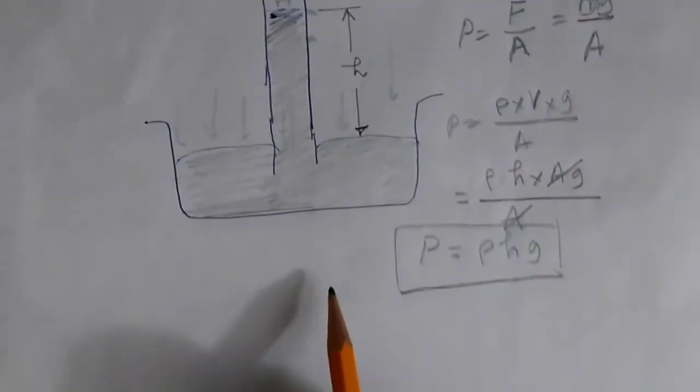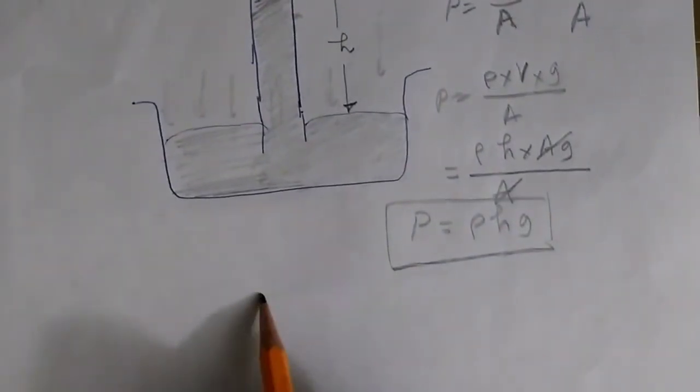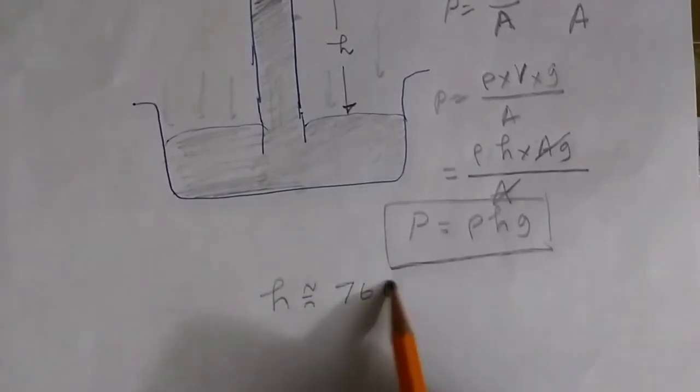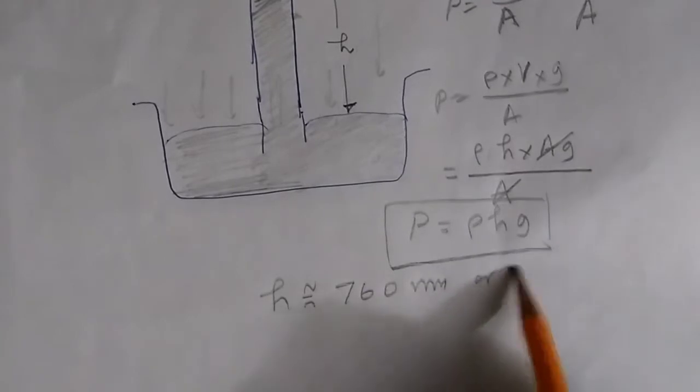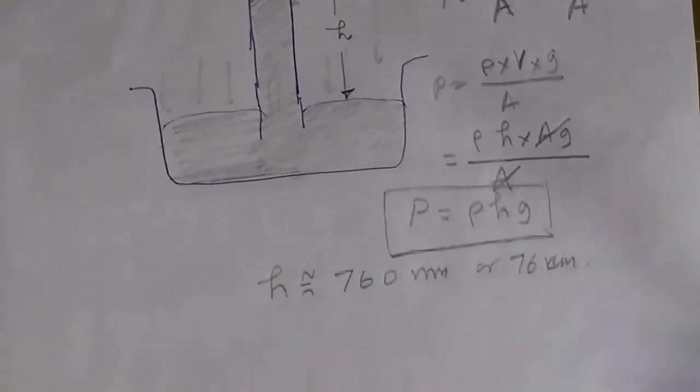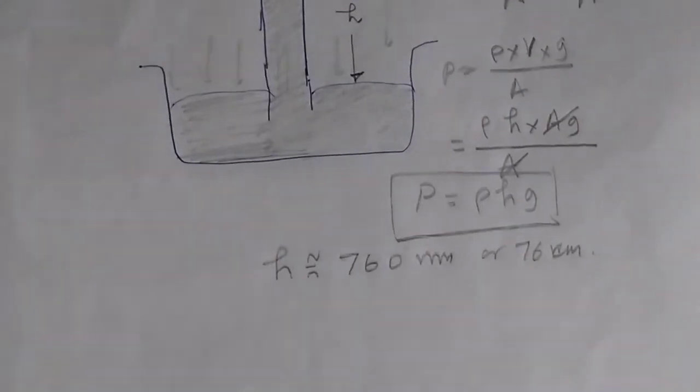In the normal condition at sea level, this height is approximately 760 mm or 76 cm. But if you take it to a higher height, it can drop to as low as 65 cm or something like that.